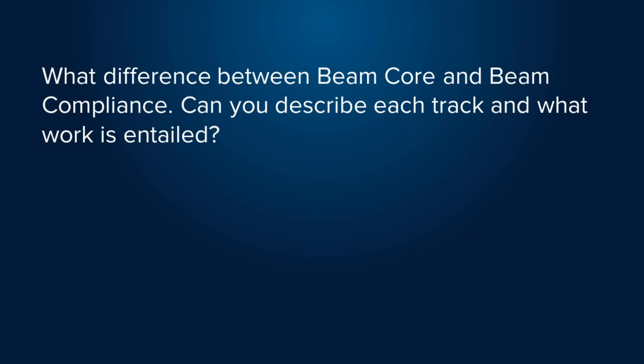The next question: what is the difference between BEAM core and BEAM compliance? Can you describe each track and what work is entailed? Right now we have two major tracks. The first is the wallet track — the next versions to be released are 5.2 and then 5.3, and all features are specified in our roadmap linked in the description below. The second track is the Confidential DeFi track, where we will release next month our BEAMx BEAM Confidential DeFi experimental platform with our version of smart contracts, asset trading in the UI wallets, and other DeFi-related features. These two main tracks will carry us probably until mid-2021.